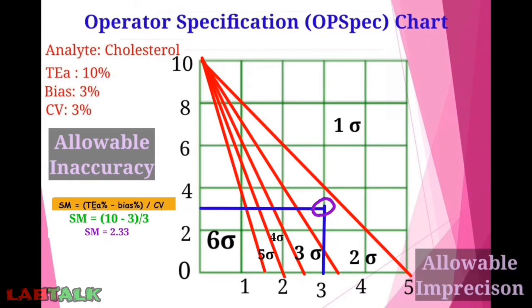The performance of the sigma matrix comes to 2.33, which falls between the first line and the second line, corresponding to the 2-sigma zone.